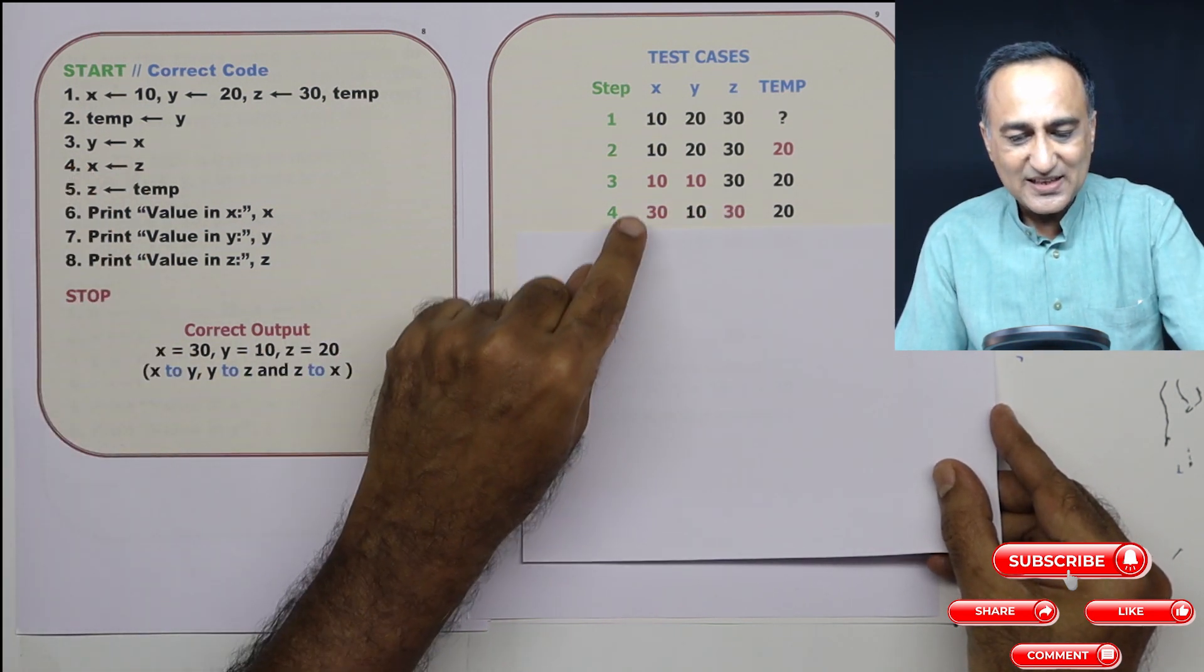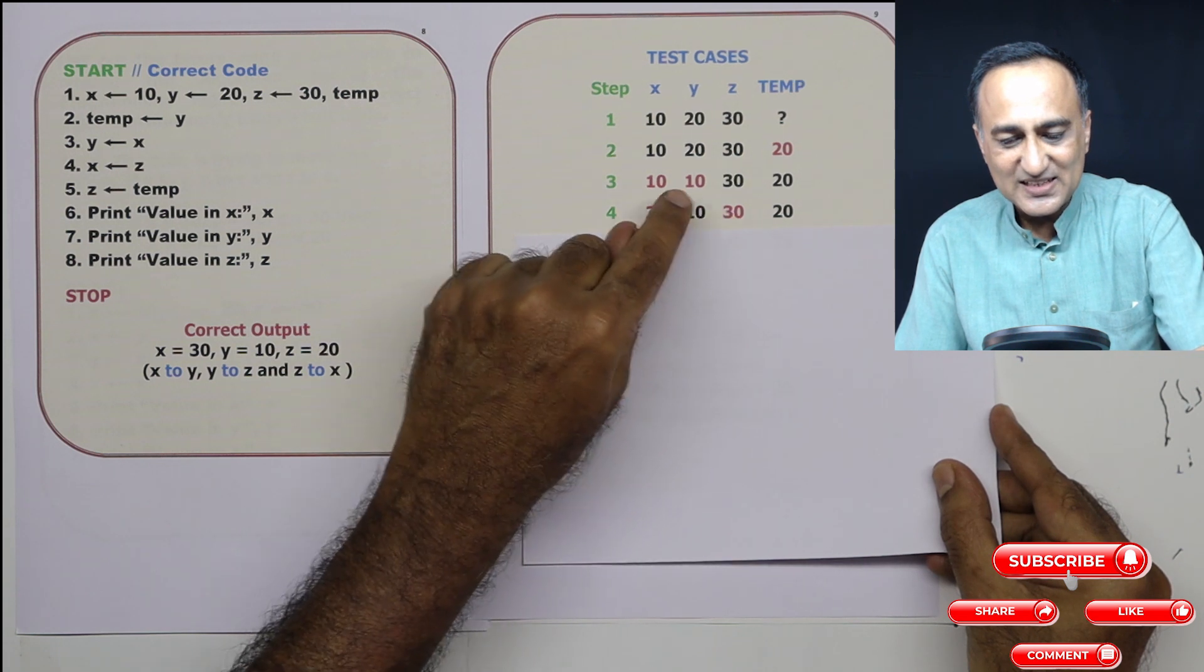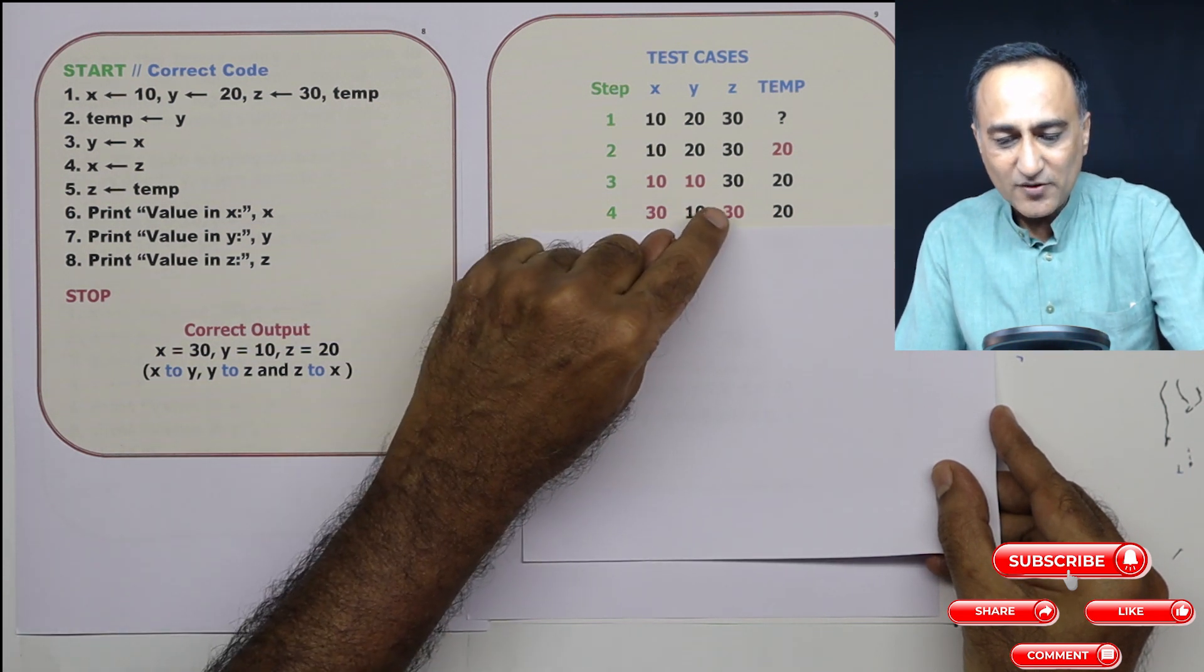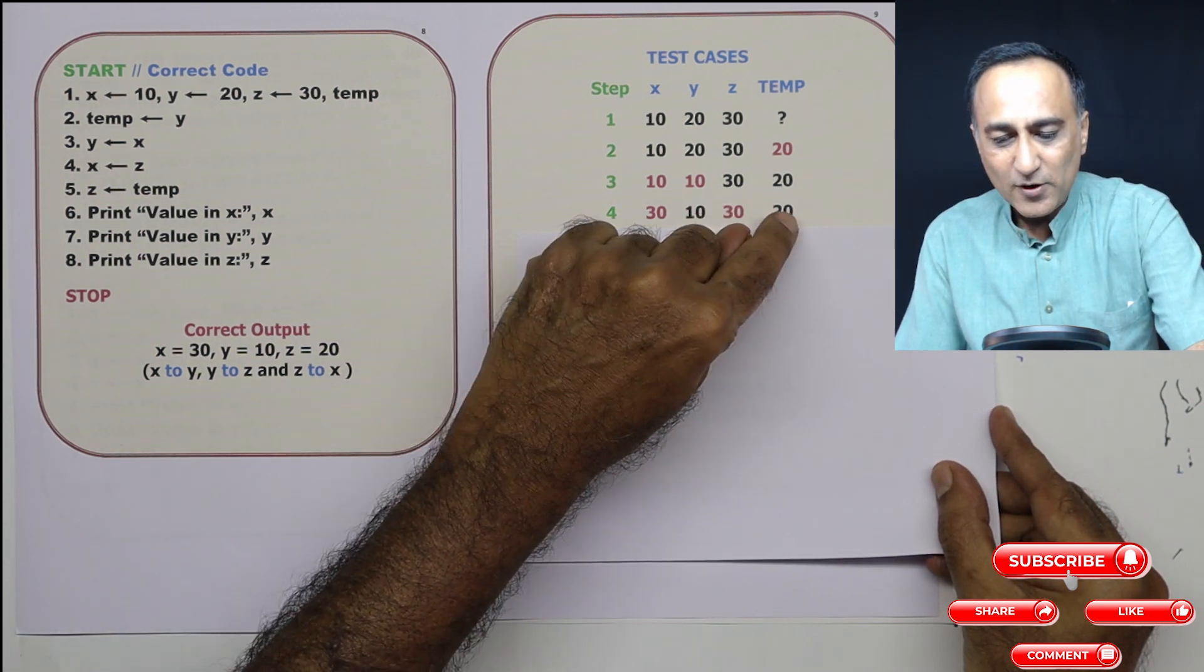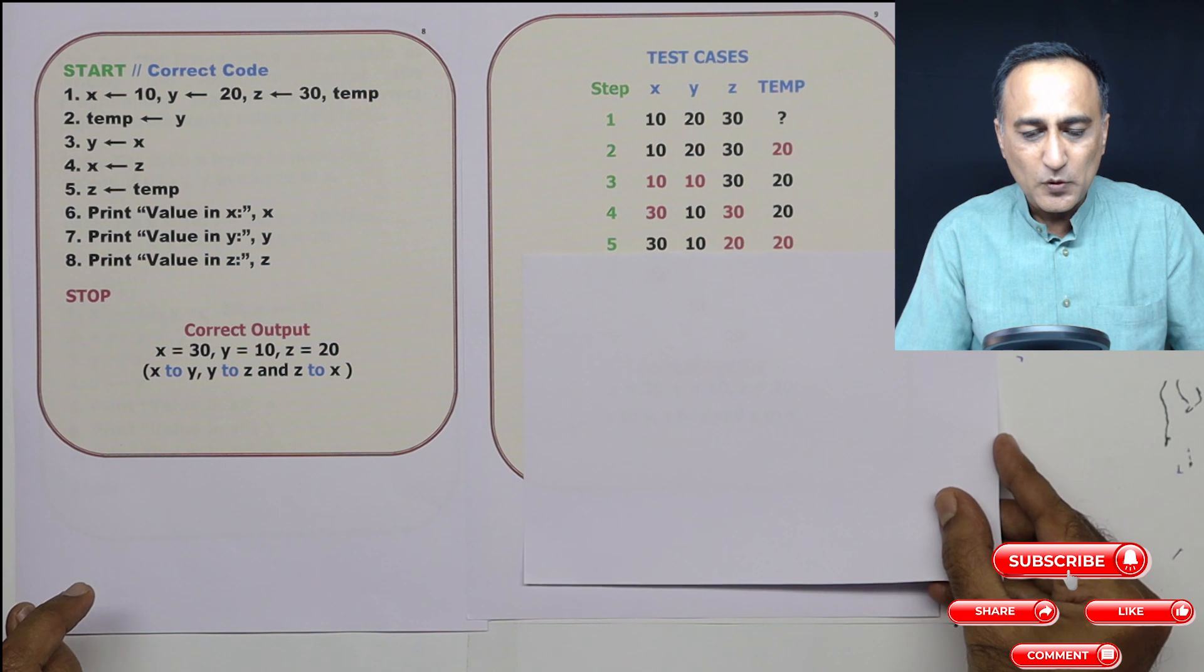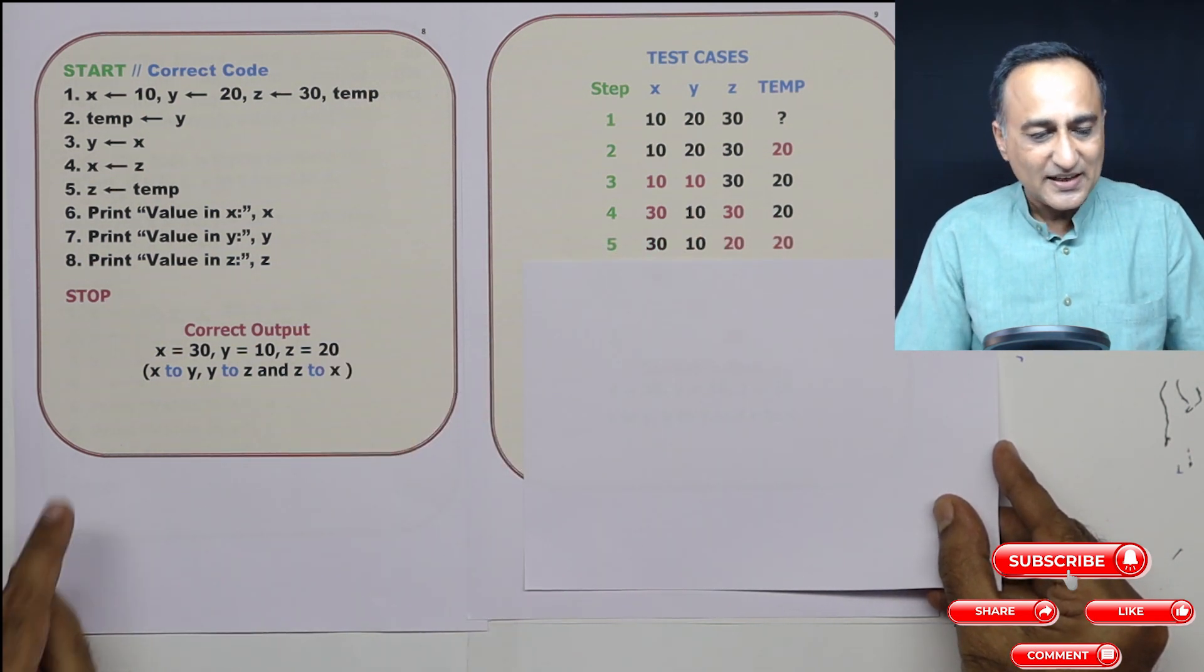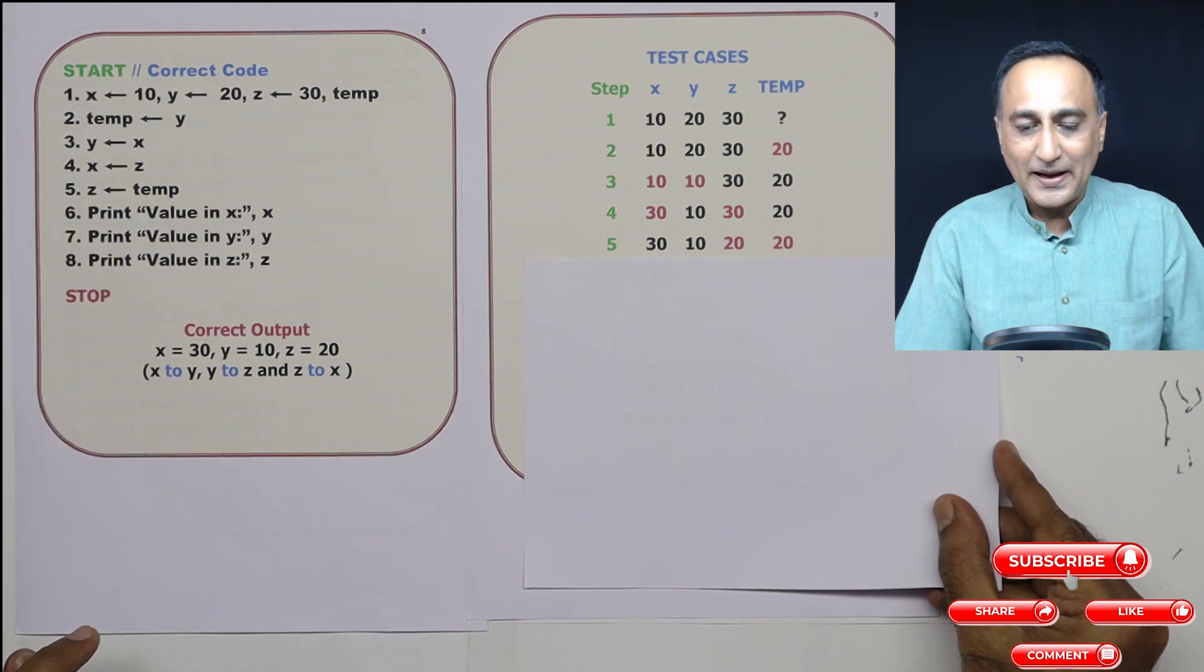z's value is given to x. So x is 30, z is 30, y is 10. Now step number five, I just have to give the value of z the value of temp. So what I am doing is 20 is copied into z, that means z is assigned the value of temp.